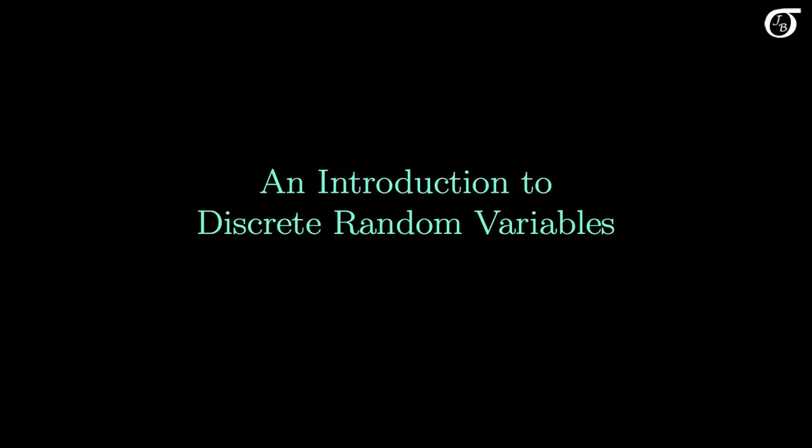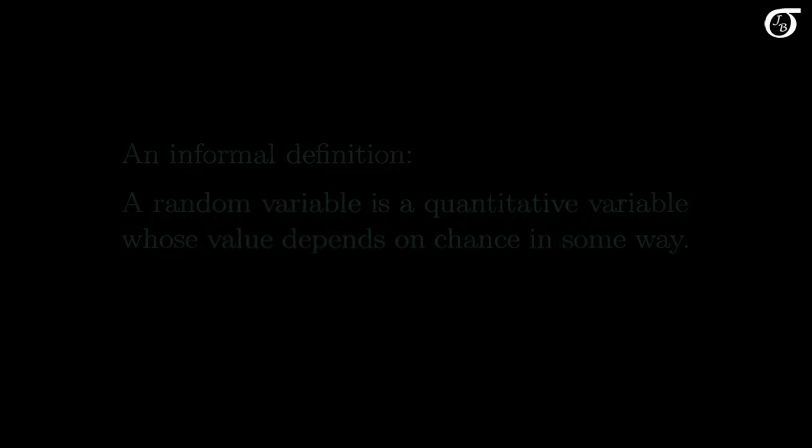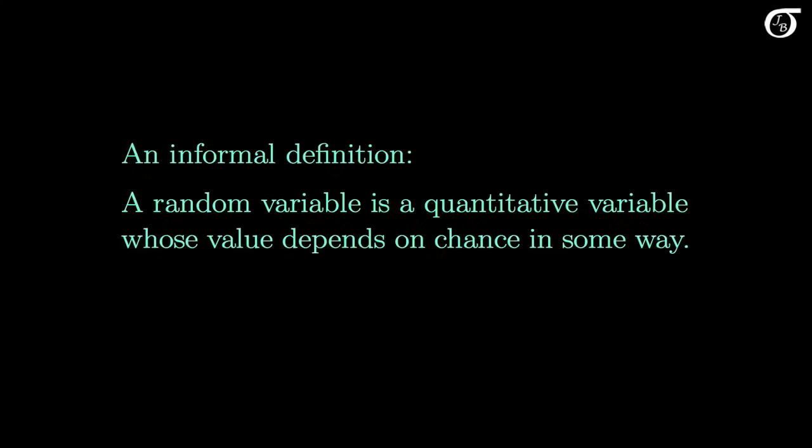Let's look at an introduction to discrete random variables and discrete probability distributions. There are formal mathematical definitions of a random variable, but let's look at an informal definition that may be a little more helpful for us. A random variable is a quantitative variable whose value depends on chance in some way. The meaning of this will become clearer as we work through examples.